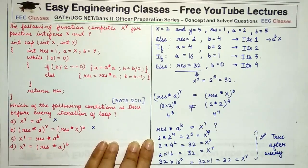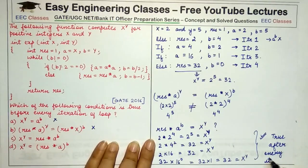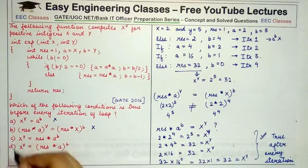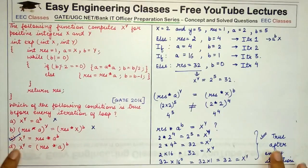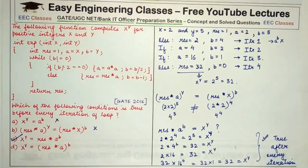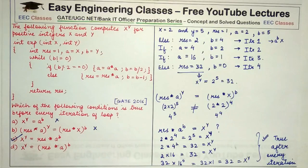You need not check the fourth option since the third has been verified for all iterations. You can take any other values of x and y and calculate which option is correct correspondingly. That was all for today's lecture — I hope you understood the question. Please like and share the video if you found it helpful, and subscribe to Easy Engineering Classes for more lectures on our preparation series and other computer science subjects. Stay tuned. Good luck.